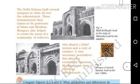The Delhi Sultans built several mosques in cities all over the subcontinent. These demonstrated their claims to be protectors of Islam and Muslims.